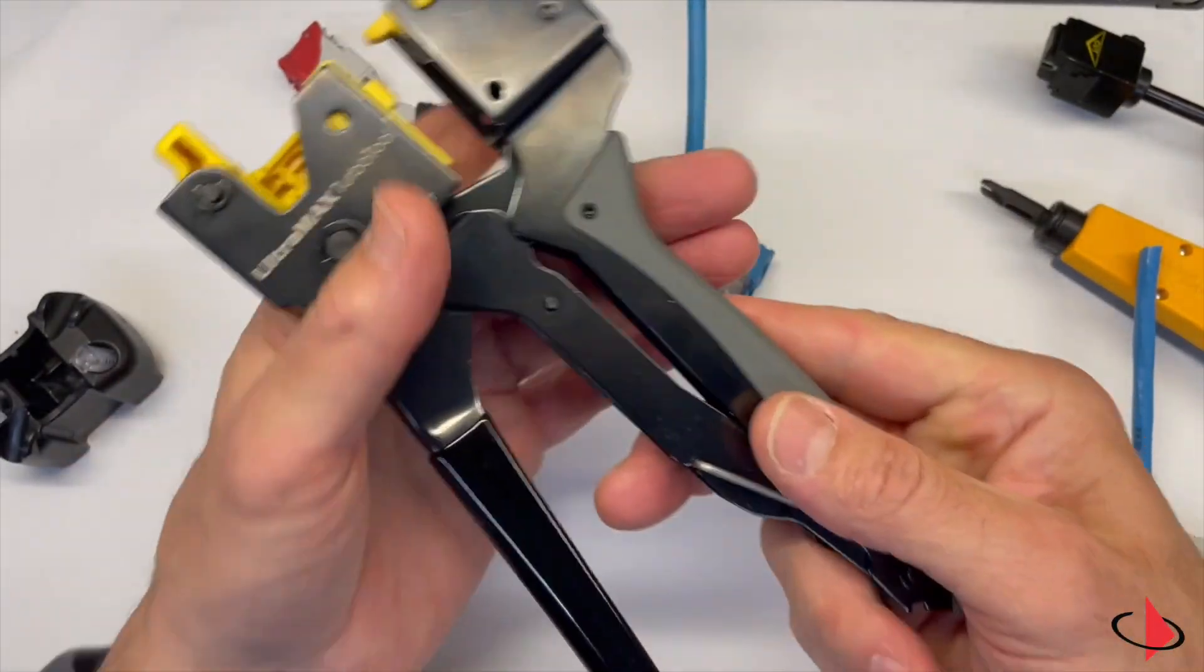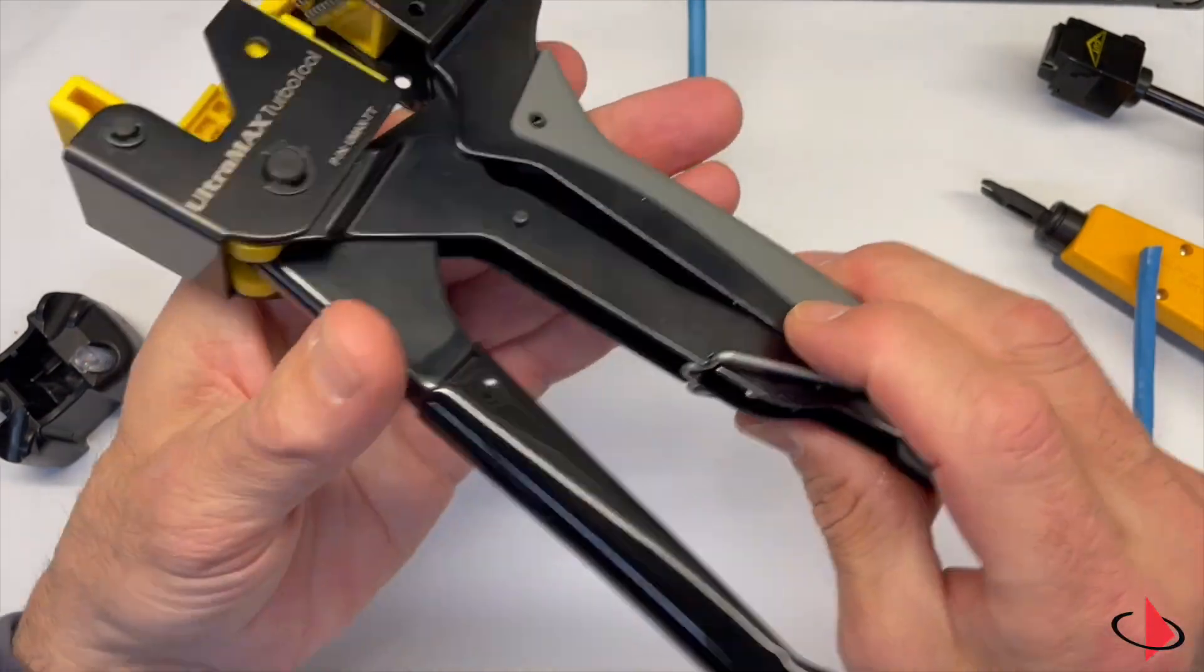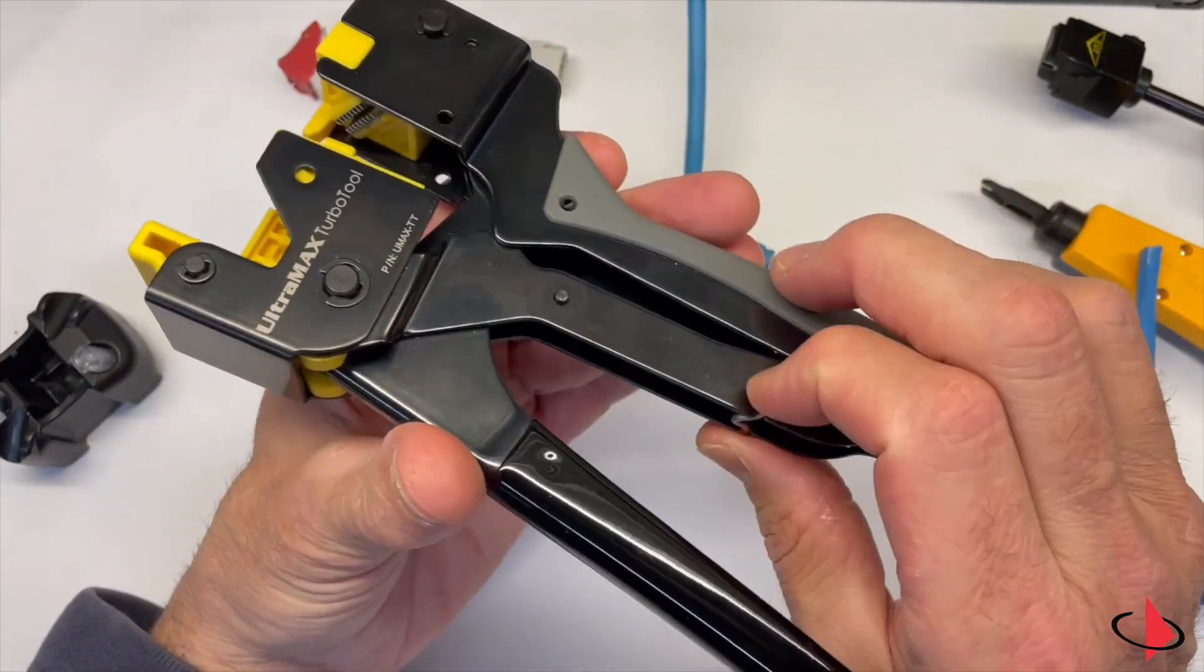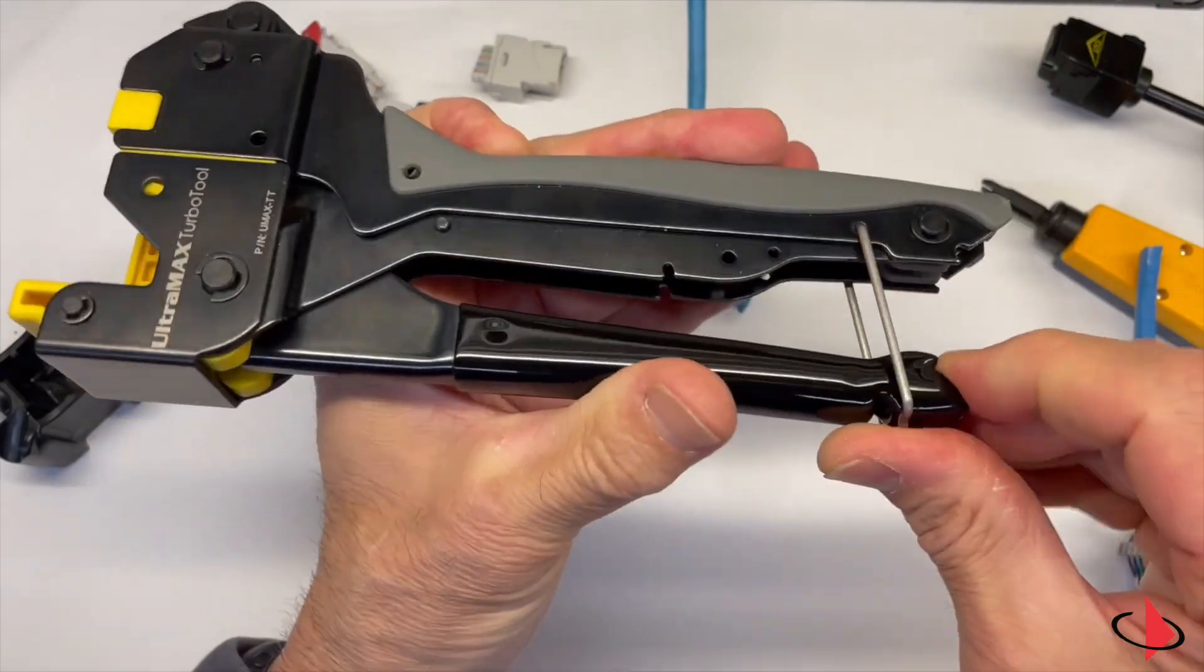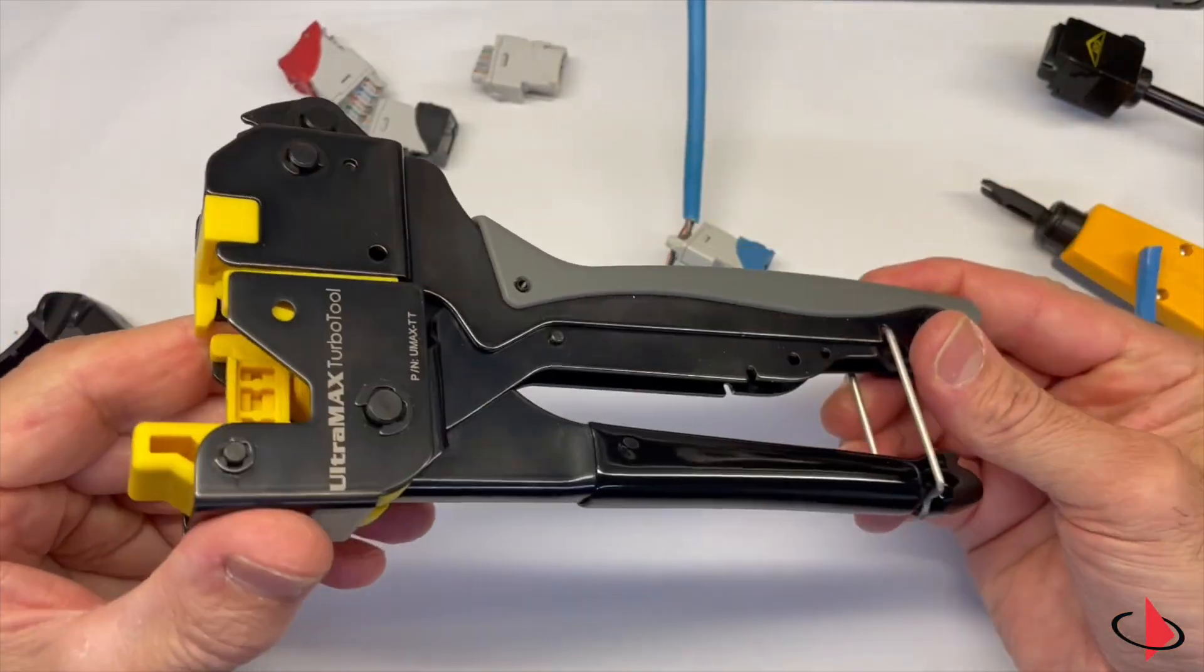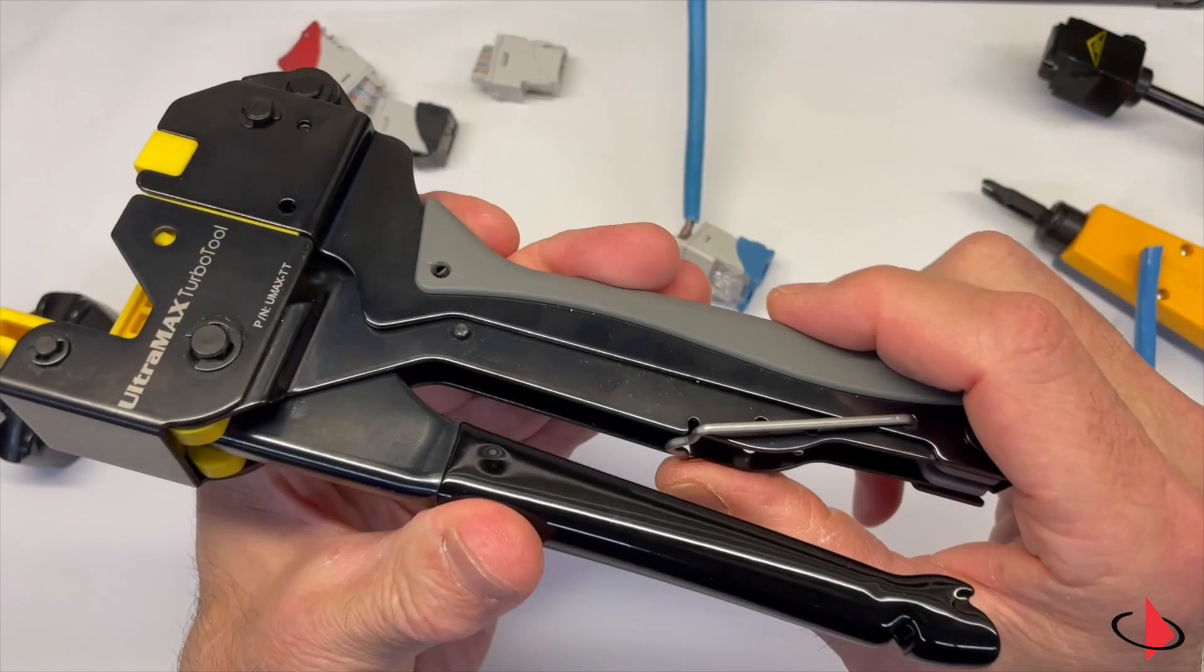One other feature is the locking latch here that allows you to lock the handle closed like this for storage. And when using the tool, the latch can be secured up out of the way here.